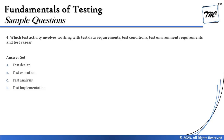Let's pick up the next question — question number four. It says: which test activity involves working with the test data requirements, test condition, test environment requirements, and test cases? The four major activities have been given, and these questions are not that complicated given that you are clear on what activities get performed as part of which phase of the testing life cycle.